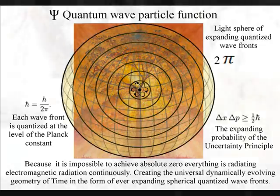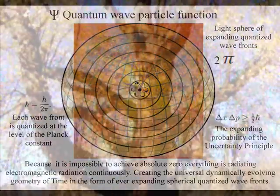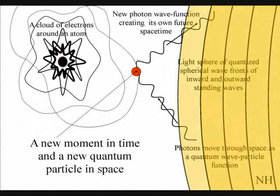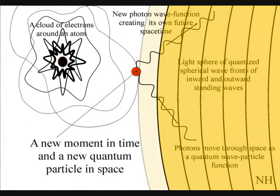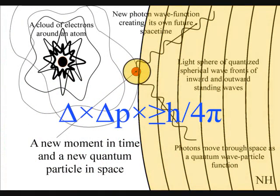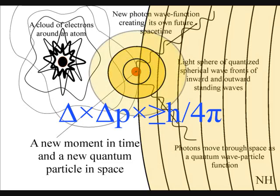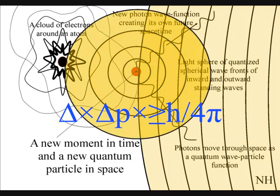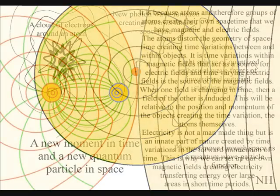In quantum atom theory, the atoms interact with light waves of electromagnetic radiation, continuously collapsing the quantum wave particle function, forming photons that form electrical charge and in turn form electromagnetic fields in three dimensions. This forms the local space-time geometry.